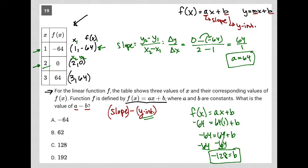a is 64. The question's asking for a minus b, so it'll be 64 minus negative 128, which is same as 64 plus 128, which is equal to 192. Therefore, choice d is the correct answer.